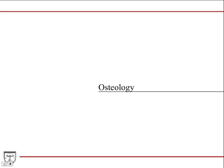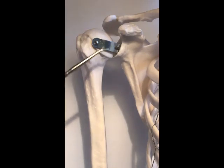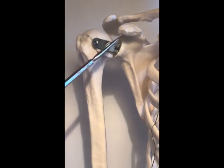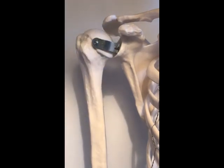We're going to transition to the skeletal model to discuss the osteology. Here on the model is the humerus of the arm. Here's the head of the humerus, and it articulates with the glenoid fossa of the scapula to form that shoulder joint.